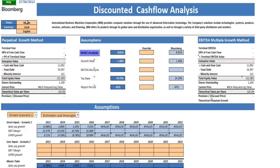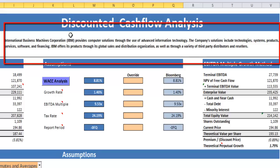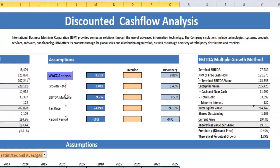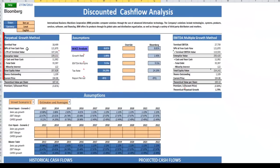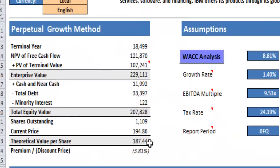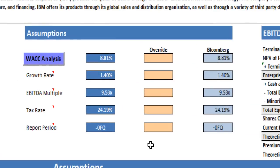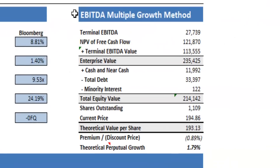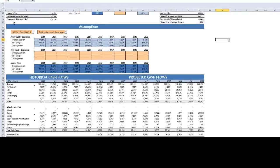A good place to look straight away is the description field that it pulls from Bloomberg — you can tell if you're on the right company straight away. Underneath, it breaks it up. You've just got the one sheet and it will stream down. You have your perpetual growth method here with all your details, which tells us that the theoretical value per share is $187.44. You've got your assumptions that you can make here in override, and you have your EBITDA multiple growth method there as well. You can see that under that method the theoretical price per share differs as well. If you scroll down, you'll see that these are the assumptions made.